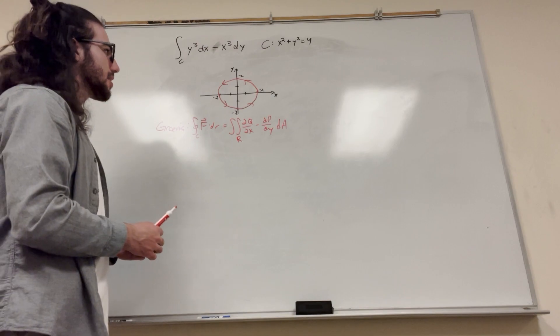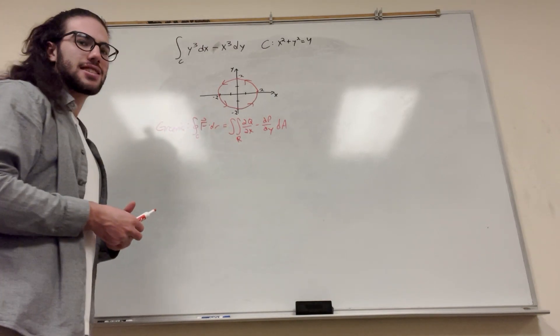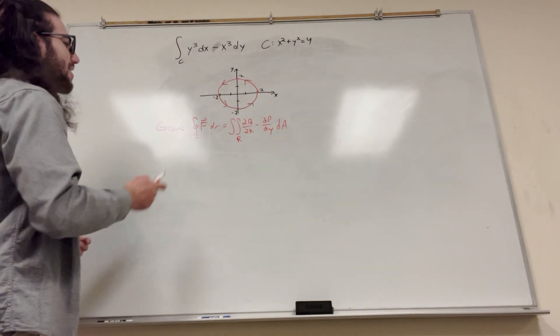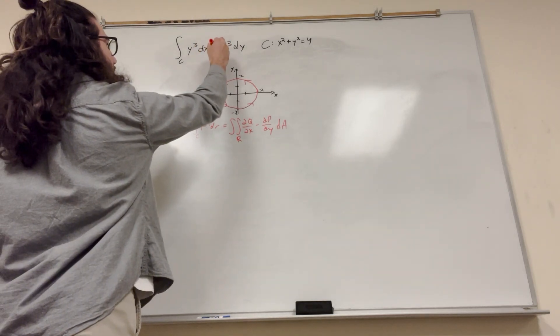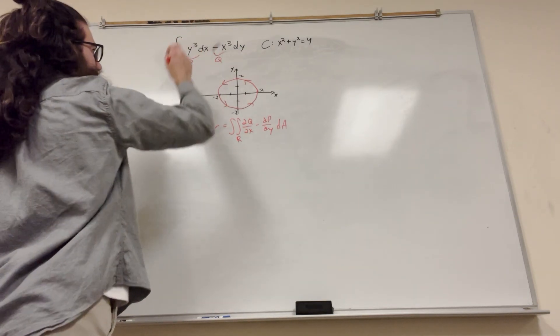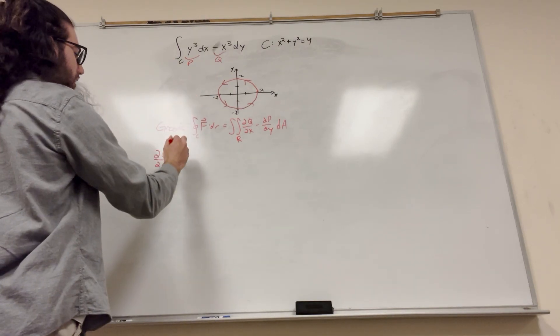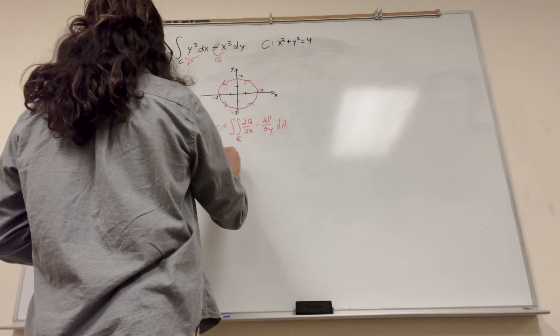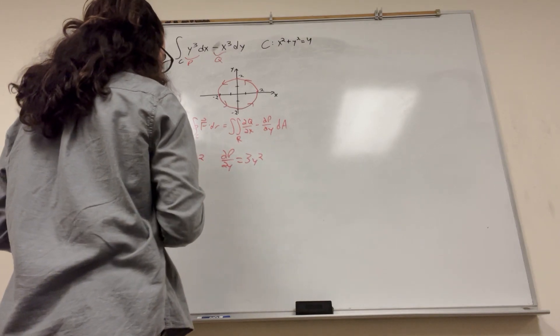So we look at our region. It's simple, it's closed, there's no holes inside of it, and it goes counterclockwise. So perfect, let's go ahead and solve it. First we need to find the derivative of q with respect to x. This is q because it corresponds to y, and this is p because it corresponds to x. So the derivative of q with respect to x is negative 3x squared, and the derivative of p with respect to y equals 3y squared.